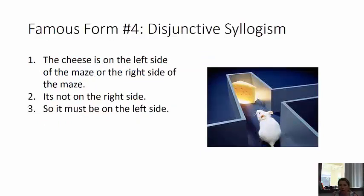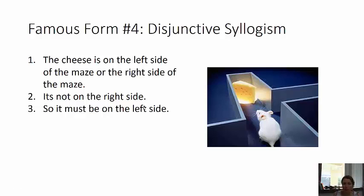Here's famous form number four, and I think it's the easiest. I actually heard a talk by a philosopher of cognitive science who argued that mice understand disjunctive syllogisms. So the mouse can smell the cheese and reasons: the cheese is on the left side of the maze or the right side. The mouse explores the whole right side, doesn't find the cheese, so it knows the cheese must be on the left side — and it goes straight there without re-exploring the right. Mammals understand disjunctive syllogism.